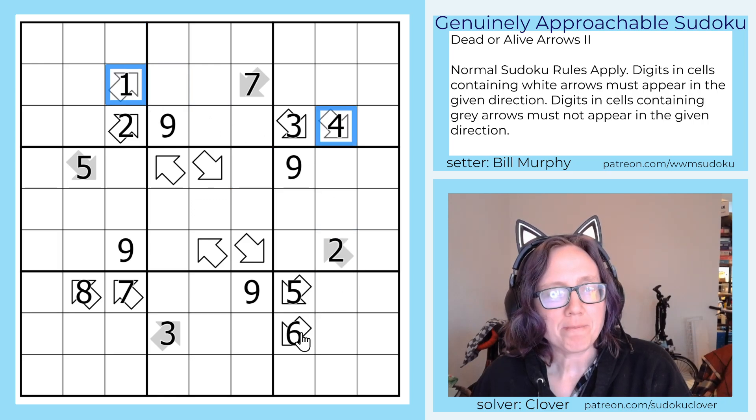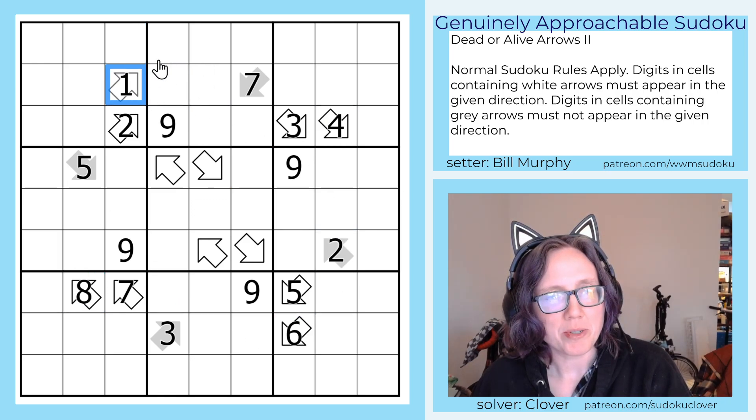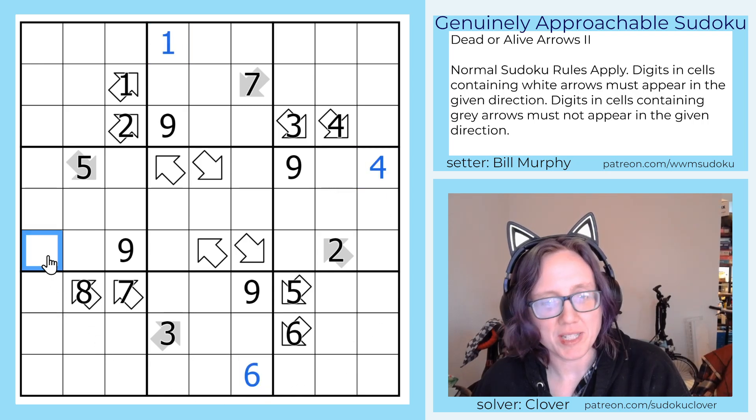We're going to start with these arrows around the periphery, because there's only one cell they're each pointing to, so that has to be a 1, a 4, a 6, and an 8.